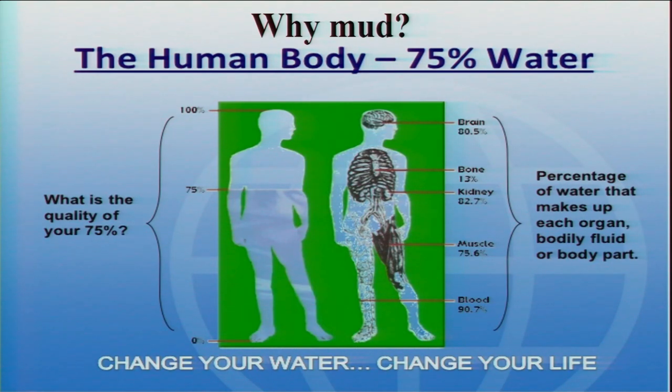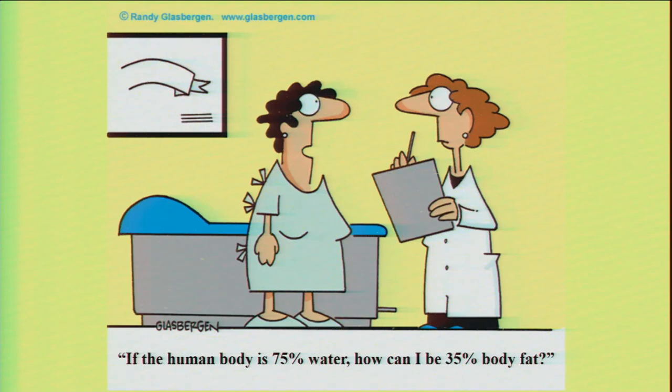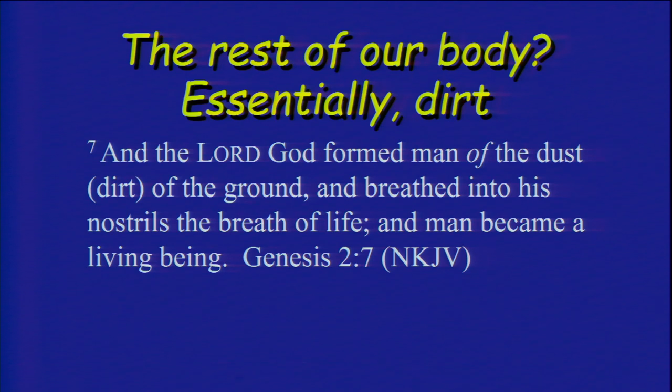The human body is 75 percent water — and the brain is actually 80.5 percent water. A lot of our body is water, and the rest of our body is essentially dirt. After all, Genesis 2:7 says, 'The Lord God formed man of the dust of the ground and breathed into his nostrils the breath of life, and man became a living being' — some scriptures say a living soul. Water plus dirt equals mud. So we're essentially mud. But that's not to denigrate us — God does a lot of good things with mud.